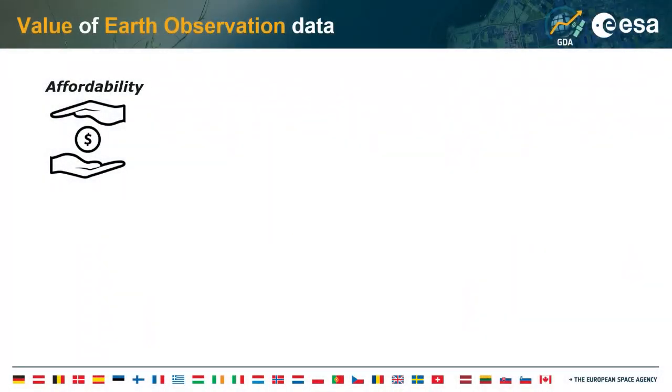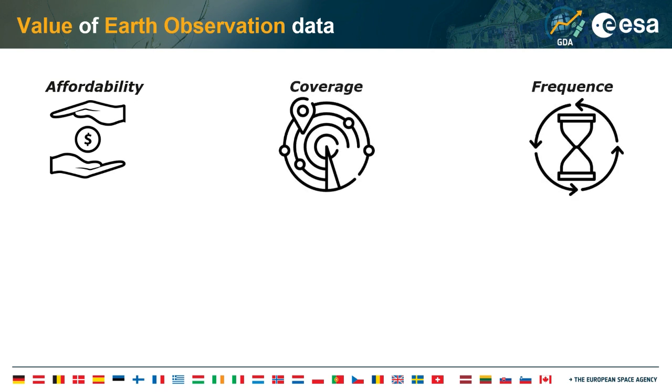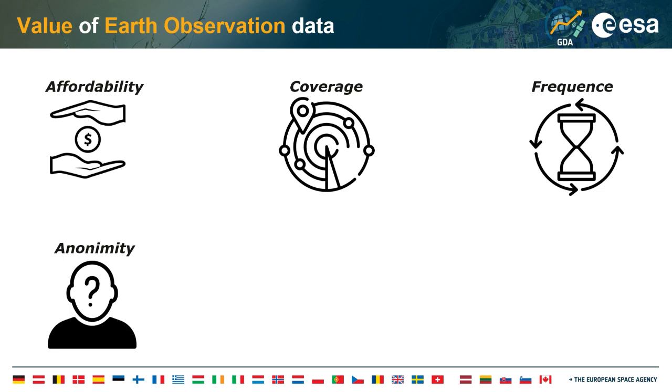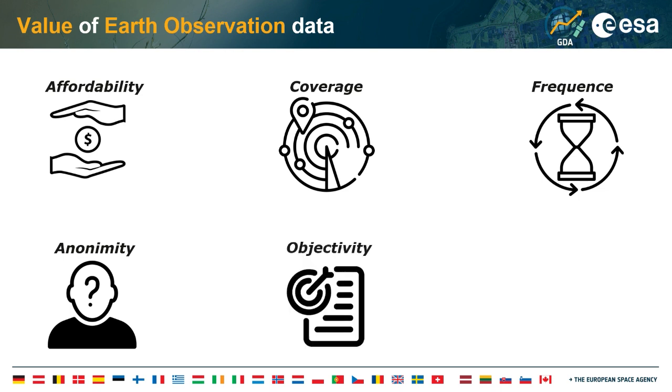Regarding the value of earth observation data: first, affordability, because a lot of this data is free and open. Then coverage — often global coverage. Frequency: Sentinel-2 covers the whole globe every five days. Anonymity, because we do not rely on personal data. Objectivity, because the sensors carry a low risk of bias. And continuity, because Copernicus and similar constellations are multi-decade efforts that will be continued in the future.